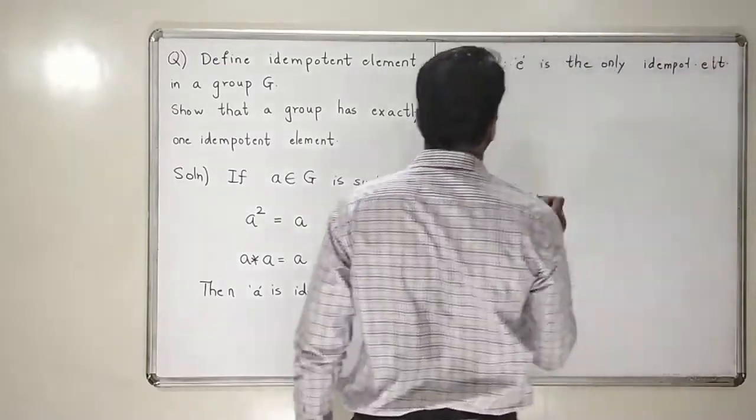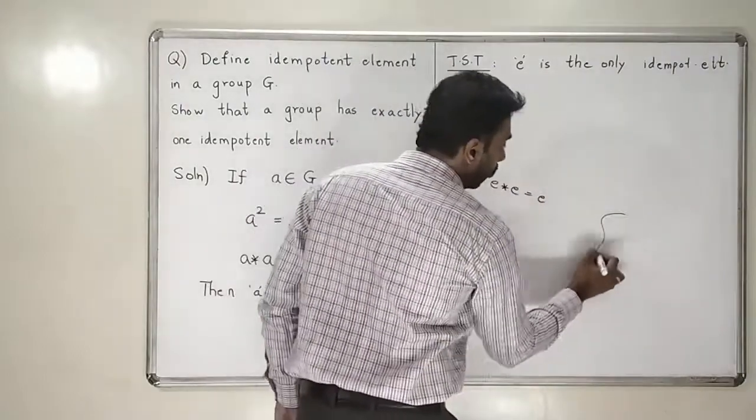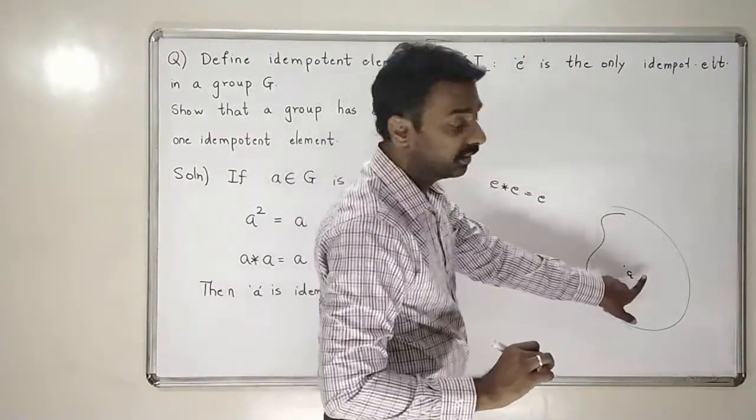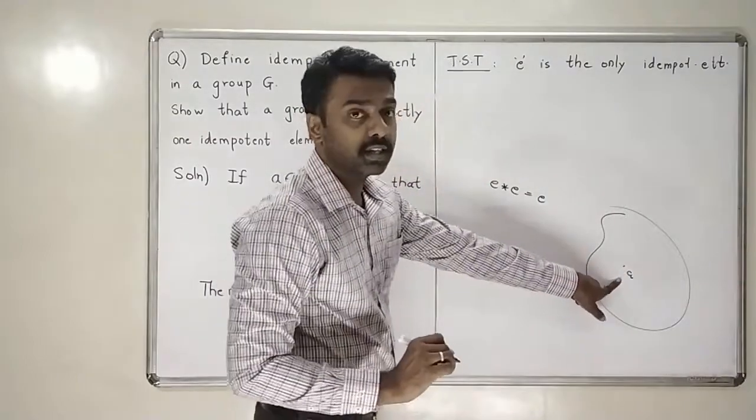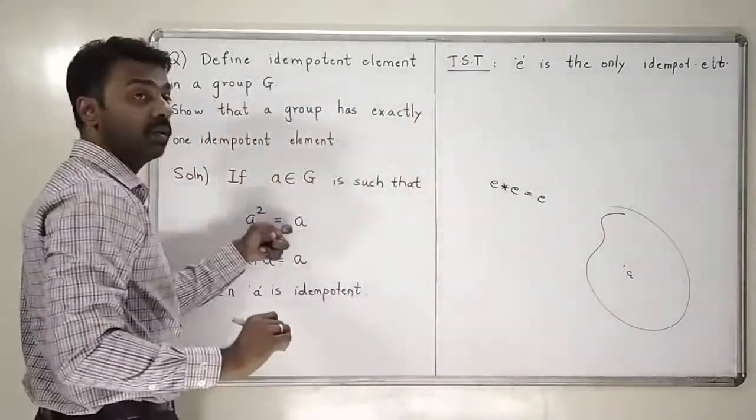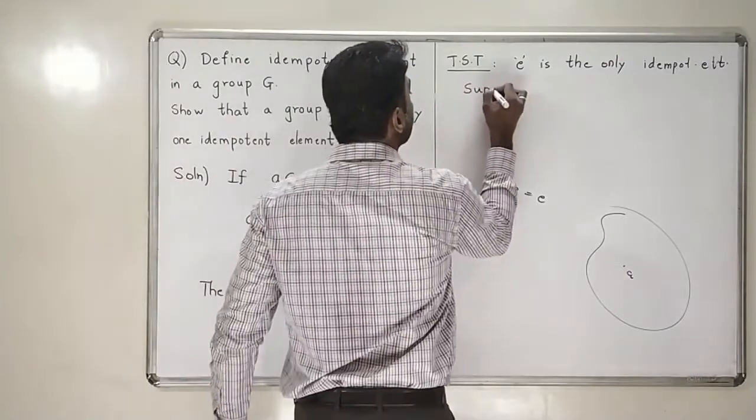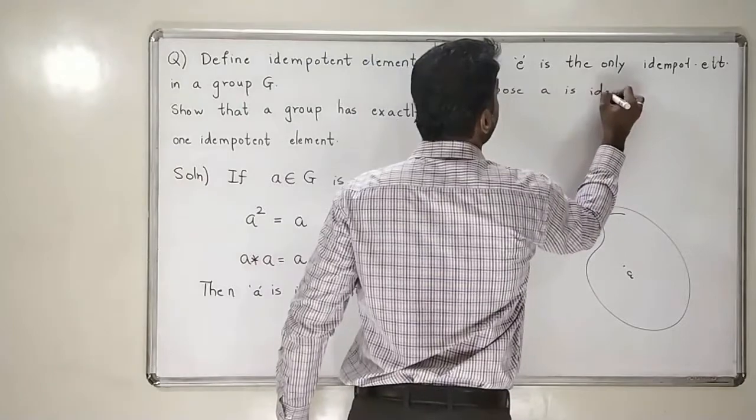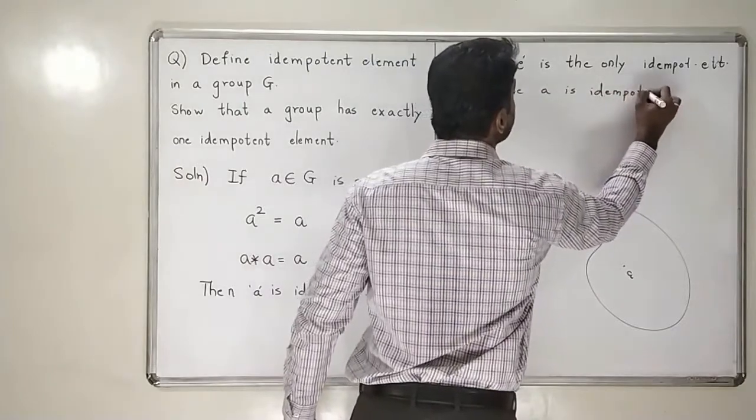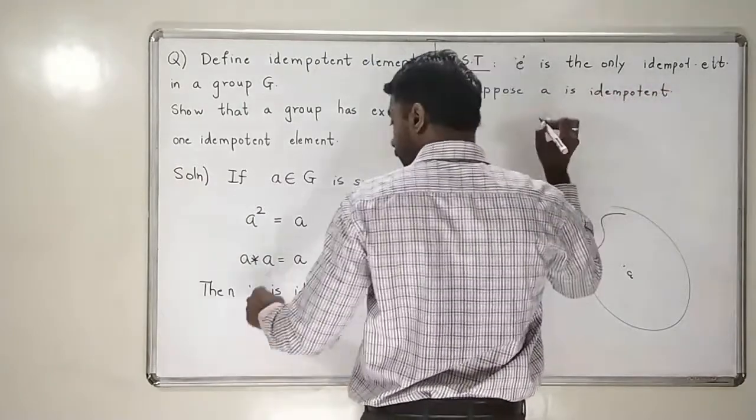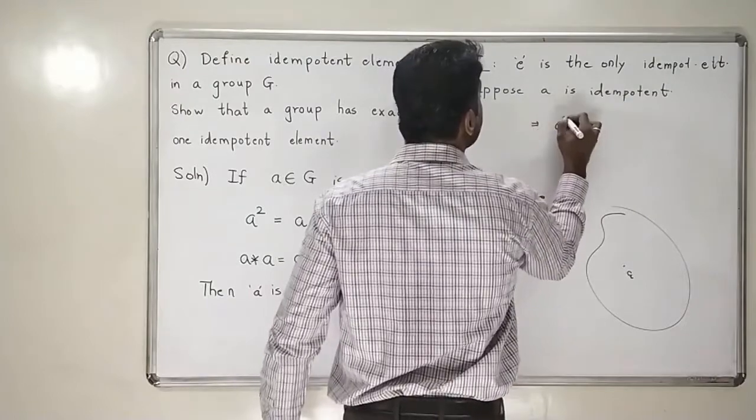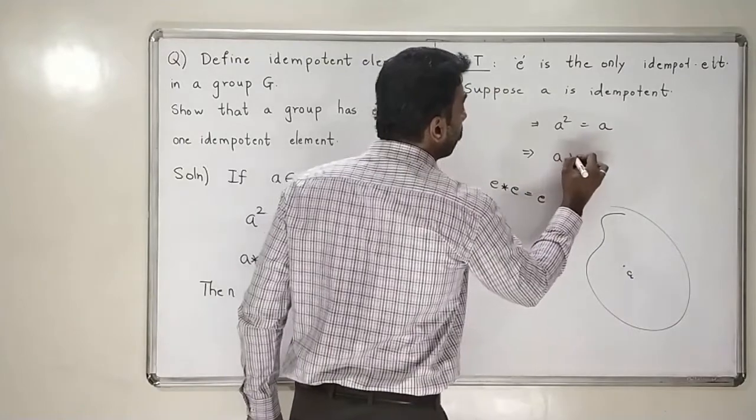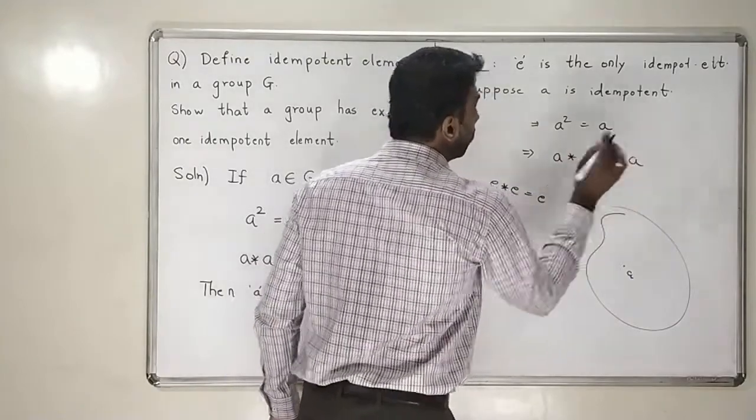Suppose in a group, suppose I find the element a which is idempotent. Then what property will this a satisfy? A will satisfy a² is equal to a. Suppose a is idempotent. Then, therefore, by definition of idempotent elements, this will mean that a² will be equal to a. And what is a²? A² means a star a is equal to a.